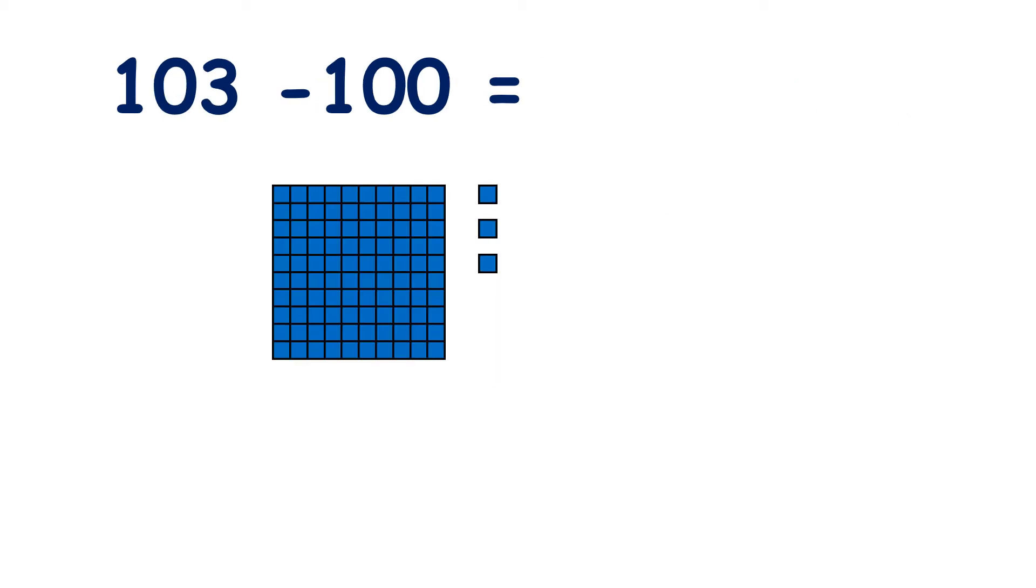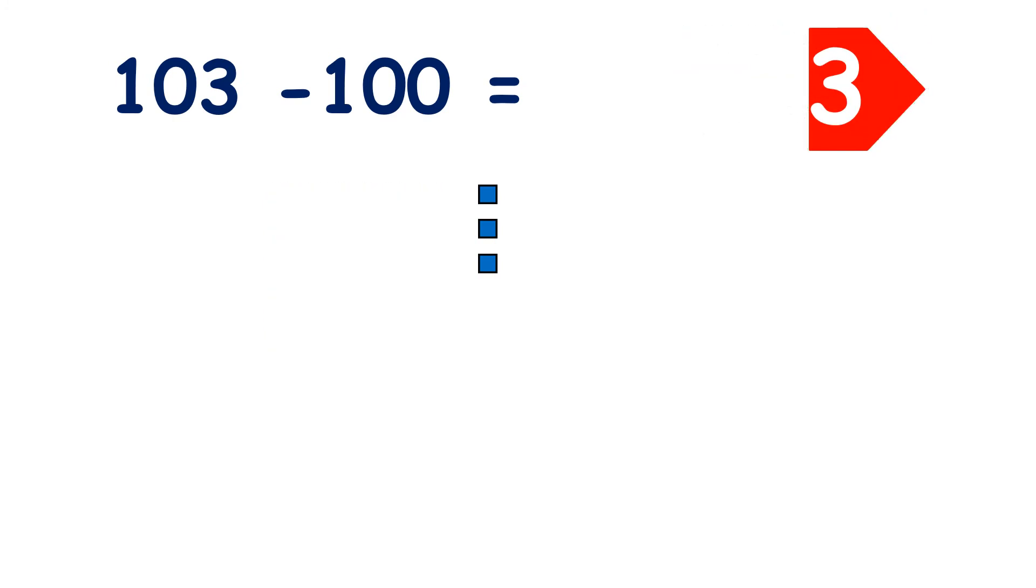What is 103 minus 100? So we have 103 units. If we take away our 100, we're left with 3 units.